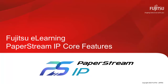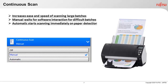Welcome to Fujitsu Fi Series eLearning PaperStream IP Core Features. Today we'll cover Continuous Scan. Continuous Scan is great for scanning multiple documents into the same batch, or scanning batches that are much larger than the size of the paper chute.